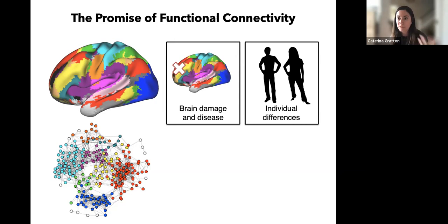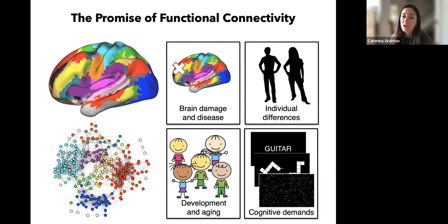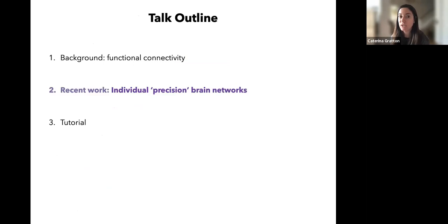This ability to use functional connectivity has led to a lot of excitement about addressing questions such as how networks are impacted by brain damage or disease, how they differ across individuals and link to trait-like characteristics, how they change over the lifespan with development or aging, and how they differ across different cognitive contexts or demands. I'll pause here to see if there are any questions about that background.